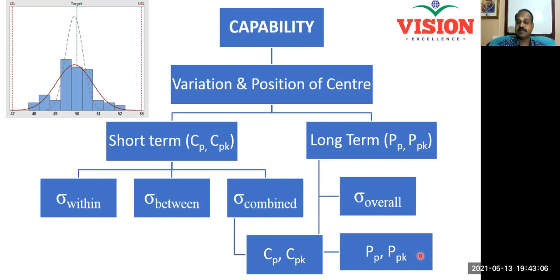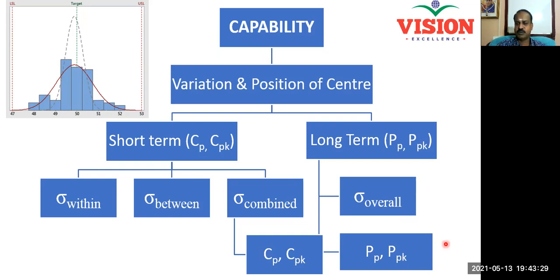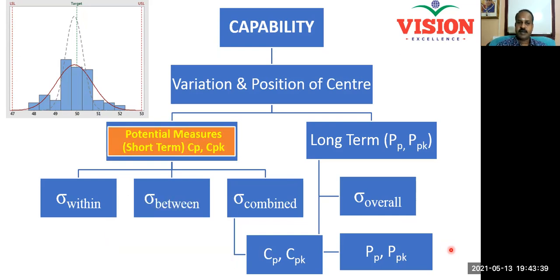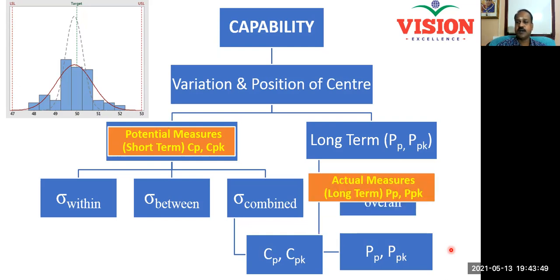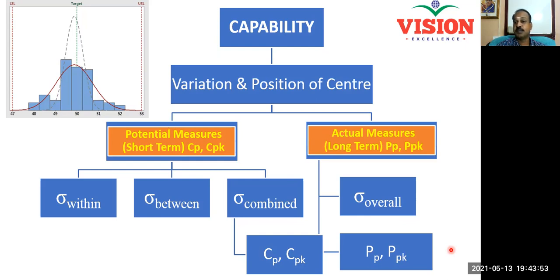Long-term capabilities will always be lower than the short-term capabilities. This is what we call process shift. Always in the long-term, a process will undergo shift and drift, and long-term capabilities will always be lower than short-term capabilities. Only when you remove the shift as well as the drift by fixing all the special causes can capability be improved. The short-term process capability are also known as potential measures of capability, and the long-term capability indices, Pp and Ppk, are also known as actual measures of process performance.